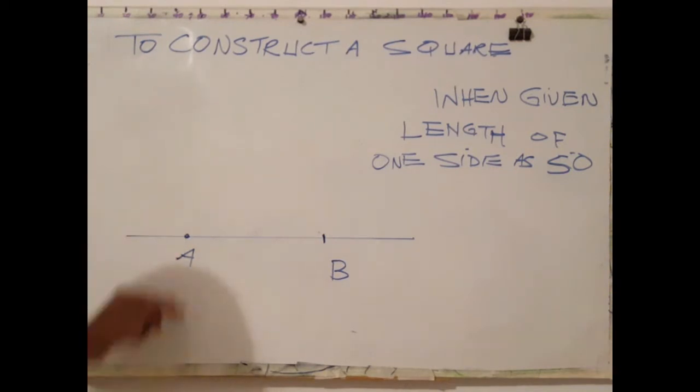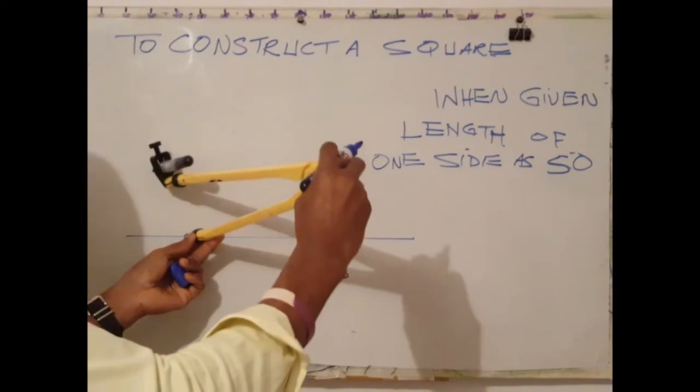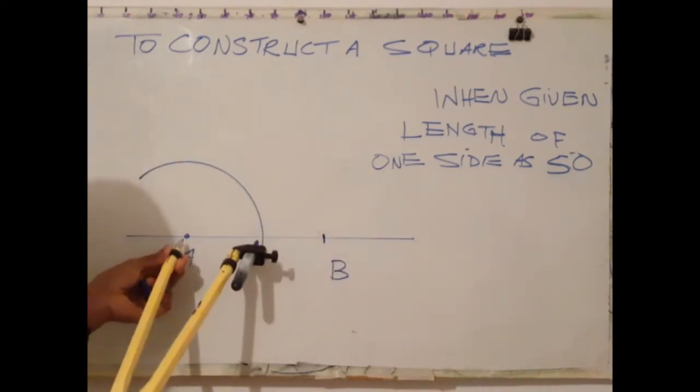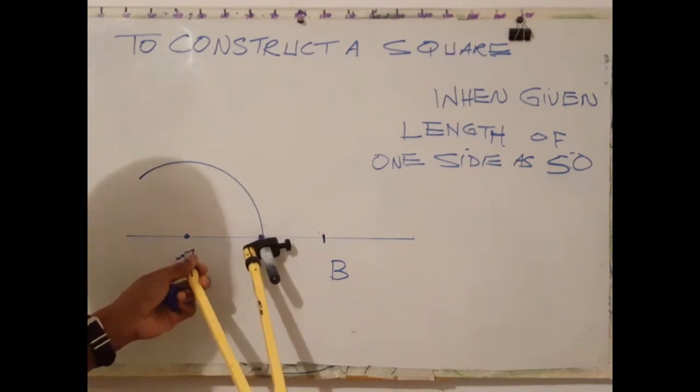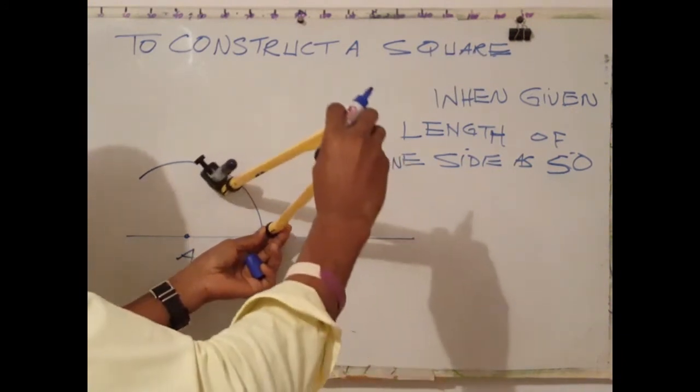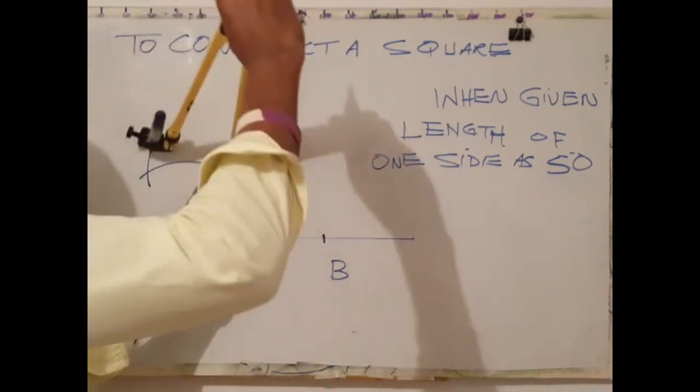The next step is to construct a perpendicular line at point A. To do this, open your compass with A as center and describe an arc. At the point where the arc cuts line AB, use that point as center and describe an arc, two arcs.